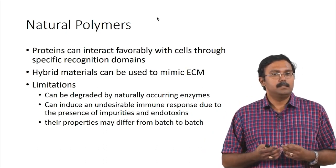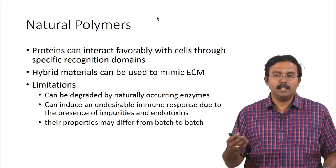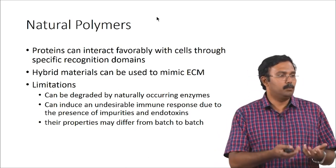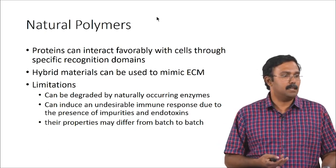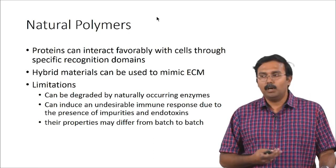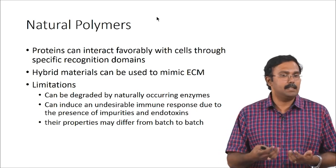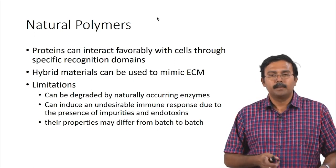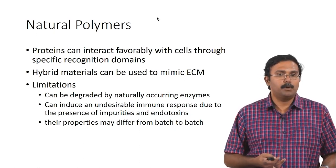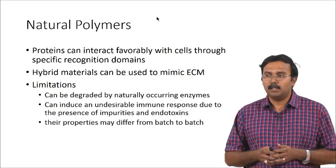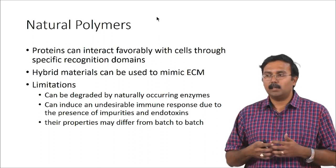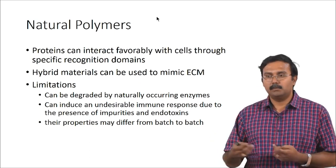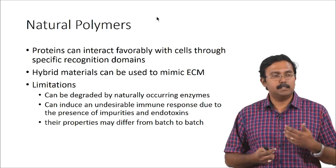The limitation would be they can be degraded by naturally occurring enzymes, which means controlling their rate of degradation becomes a challenge. If you are going to put it in a wound site, for example, you are going to have some matrix metalloproteases there which can actually degrade some of these compounds. You would want to cross-link them in a way that they do not get degraded more rapidly than your desired rate of degradation. Another problem would be an undesirable immune response due to the presence of impurities or endotoxins, because you are going to be extracting it from another place. There can always be some amount of endotoxins remaining, even from a bacterial culture — bacterial cell wall or something remaining after purification — which can trigger immune reactions and lead to rejection of the implant.